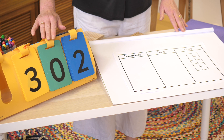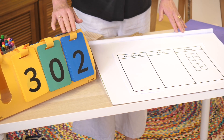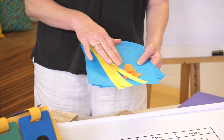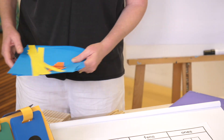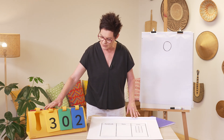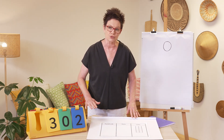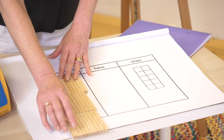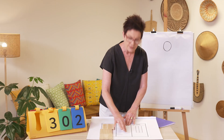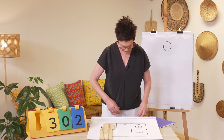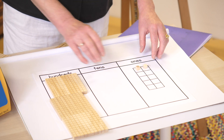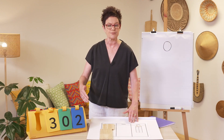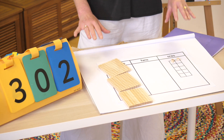Let's start. I have a random number: three hundreds, zero tens, and two ones. Let's make it using MAB blocks. I have three hundreds — zero tens, nothing there, none at all — and two ones. This is how I make and write three hundred and two.